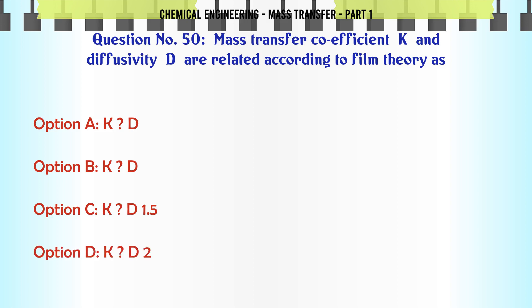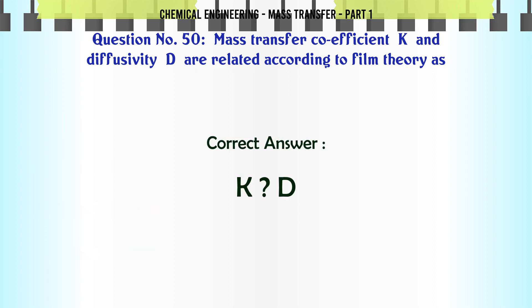Mass transfer coefficient K and diffusivity D are related according to film theory as: A. K proportional to D. B. K proportional to D. C. K proportional to D^1.5. D. K proportional to D^2. The correct answer is K proportional to D.